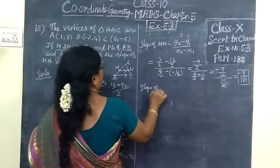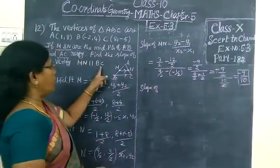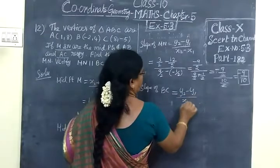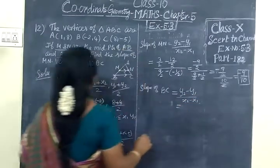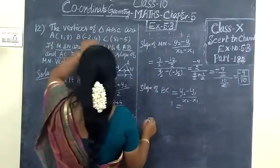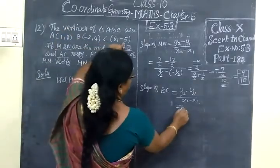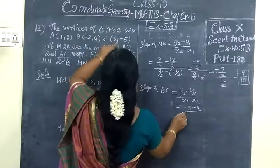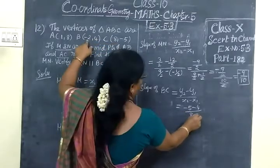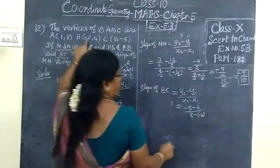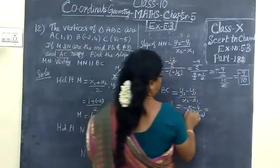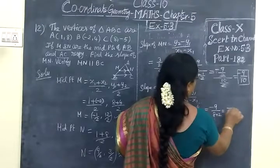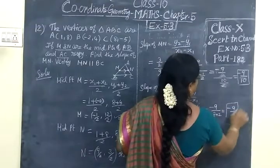Now we calculate the slope of BC. The question states that MN is parallel to BC. Using the same formula Y2 minus Y1 by X2 minus X1, we take points B and C. So Y2 is -5 minus Y1 which is 4, divided by X2 which is 8 minus X1 which is -1. That's -5-4 over 8-(-1). Minus minus becomes plus, so 8 plus 1. This gives us -9 over 9, which equals -1. Wait, let me recalculate: -9 by 10, so it equals -9/10.